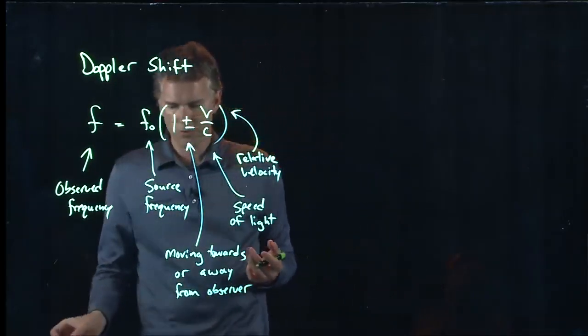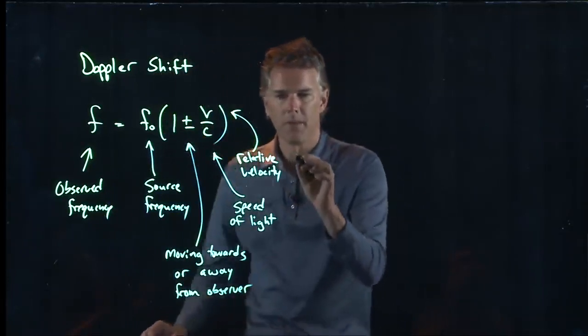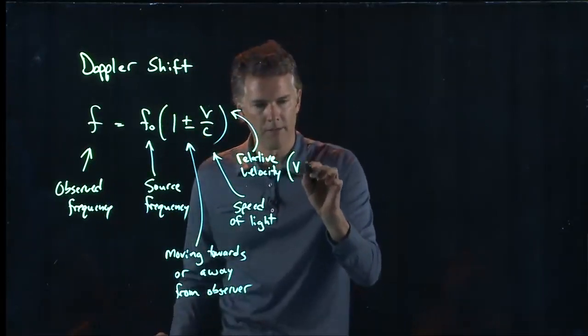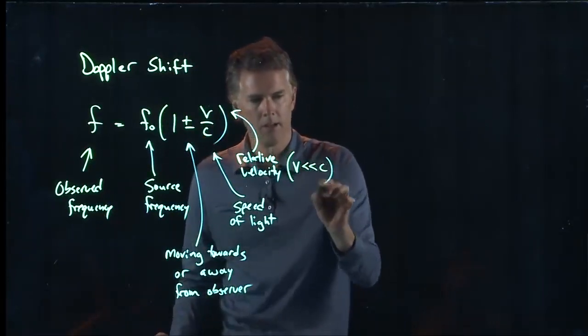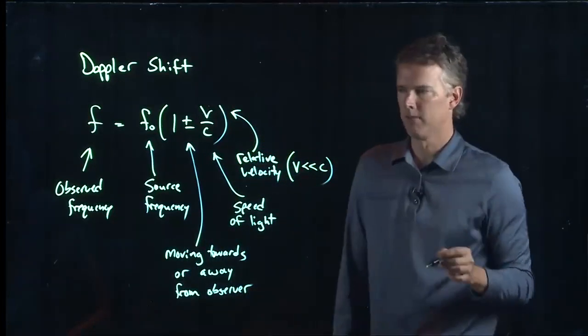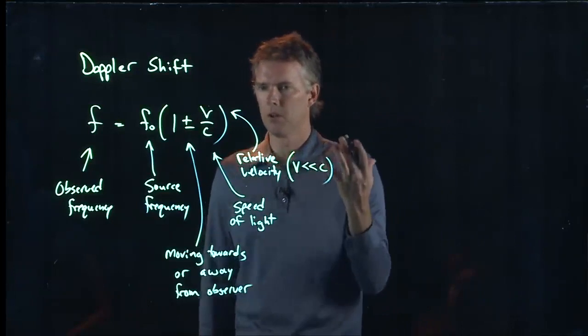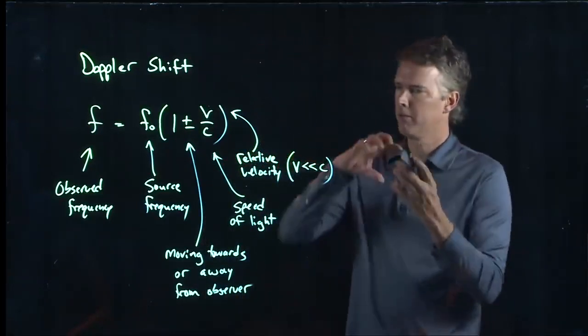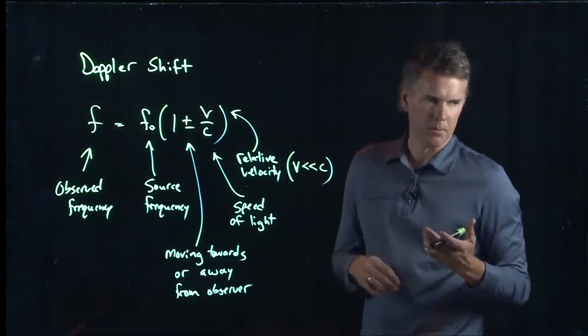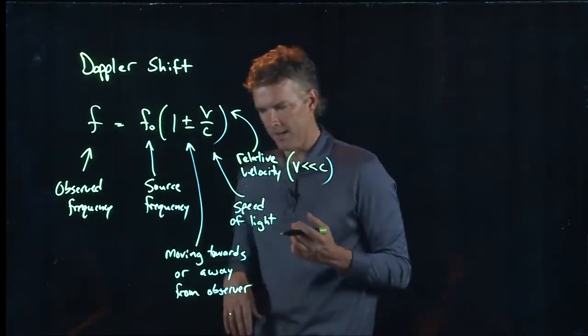Now this is true when the relative velocity, V, is much less than the speed of light. It gets a little more complicated once you get up to close to the speed of light. But for most objects that we're familiar with, the thing is not going to be moving anywhere near the speed of light.